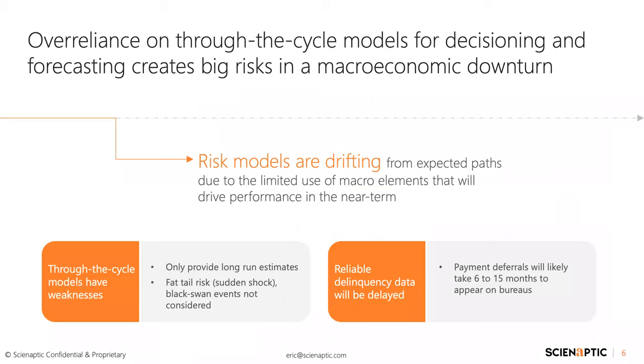Most of you are probably dealing with through-the-cycle models that present some challenges for both credit decisioning and forecasting when a macro environment like the one we're experiencing occurs. Risk models are almost definitely drifting from expected paths, due to most through-the-cycle models deliberately excluding macro elements in the makeup of the model. That said, a lot of you have probably overlaid macro indicators to help influence decisioning.